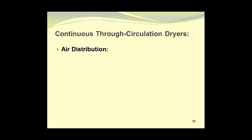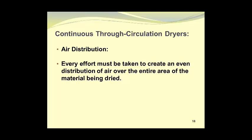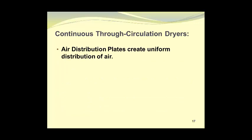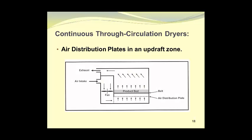Air distribution is an important factor. Every effort must be taken to create an even distribution of air over the entire area of the material being dried. Uneven distribution of air creates a lack of uniformity in the moisture of the dried product leaving the dryer. Air distribution plates create uniform distribution of air, as their name implies. Without them, air flow patterns are chaotic. Positioning of the distribution plates is quite important.